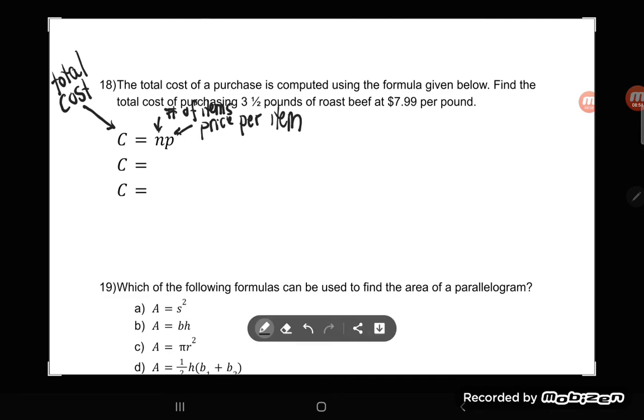So it says find the total cost. So C is what we're finding. So it will remain a C. And so the number of items we're going to buy, well, we're going to buy three and a half pounds of roast beef. So how many items we're buying? We're buying three and a half. So I'm going to plug three and a half in for N. And then P is my price per pound or my price per item. I can see that it costs me $7.99 per pound. Again, these two things are shoved together. They're multiplying. And so I'll put $7.99 in parentheses.